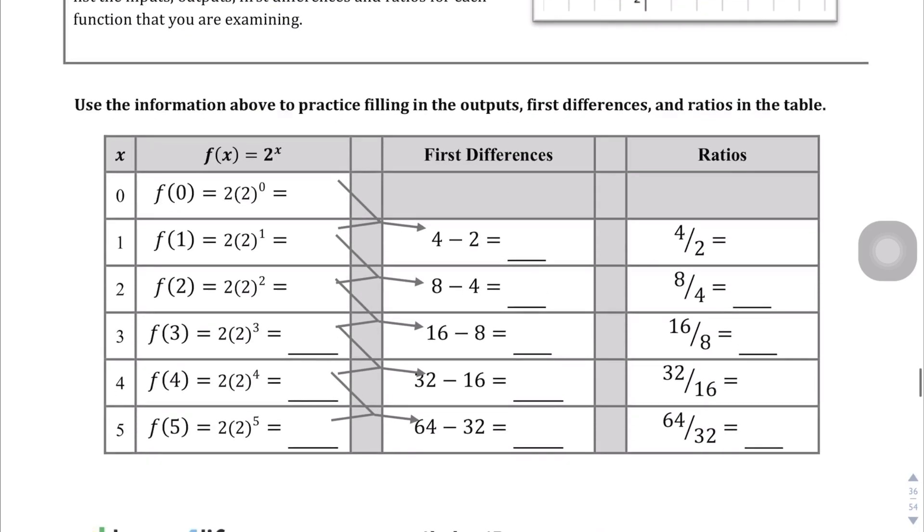Let's take a look at this table as an example. We're going to assume that the second differences are not equal either, so after we fill out the first differences column, we're going to be moving to the ratio. Let's look at the first differences. 4 minus 2 is 2, 8 minus 4 is 4, 16 minus 8 is 8, 32 minus 16 is 16, 64 minus 32 is 32, and so obviously first differences are not equal.